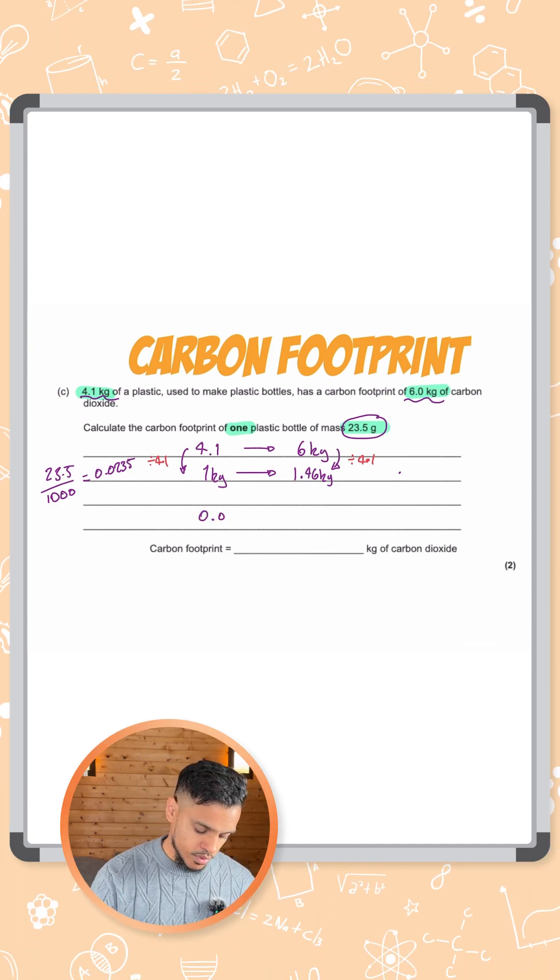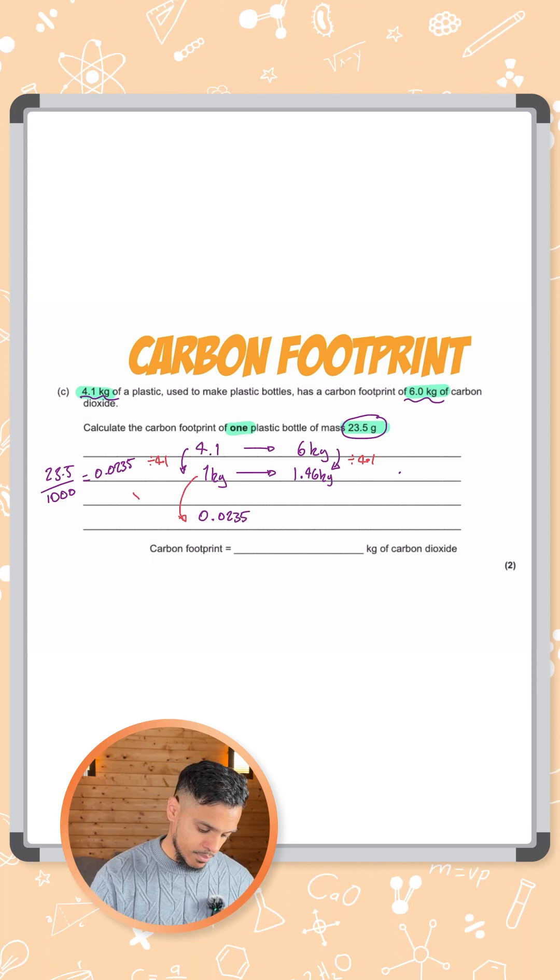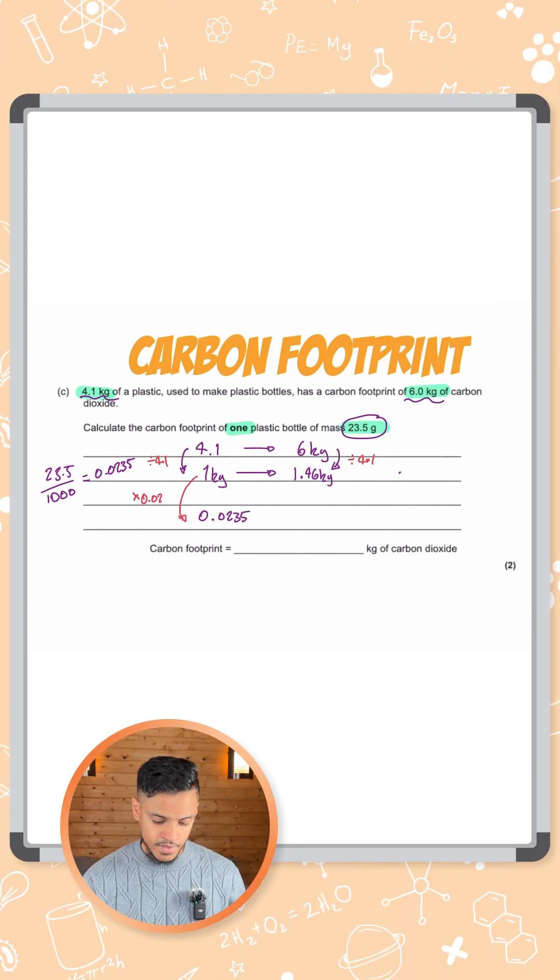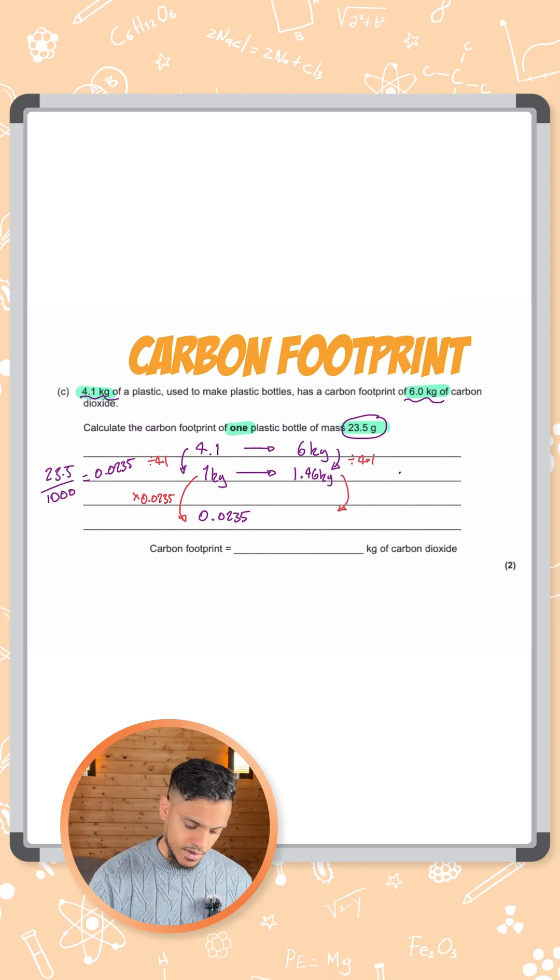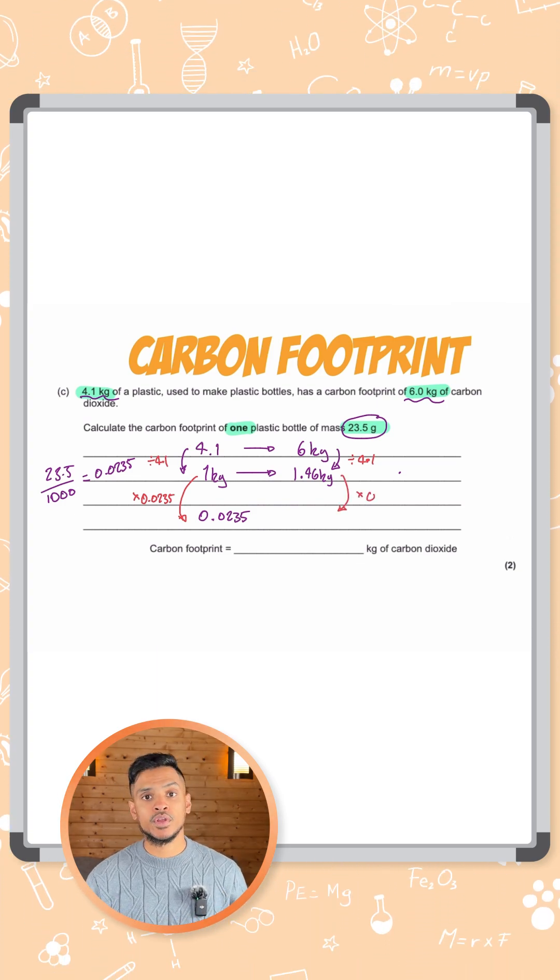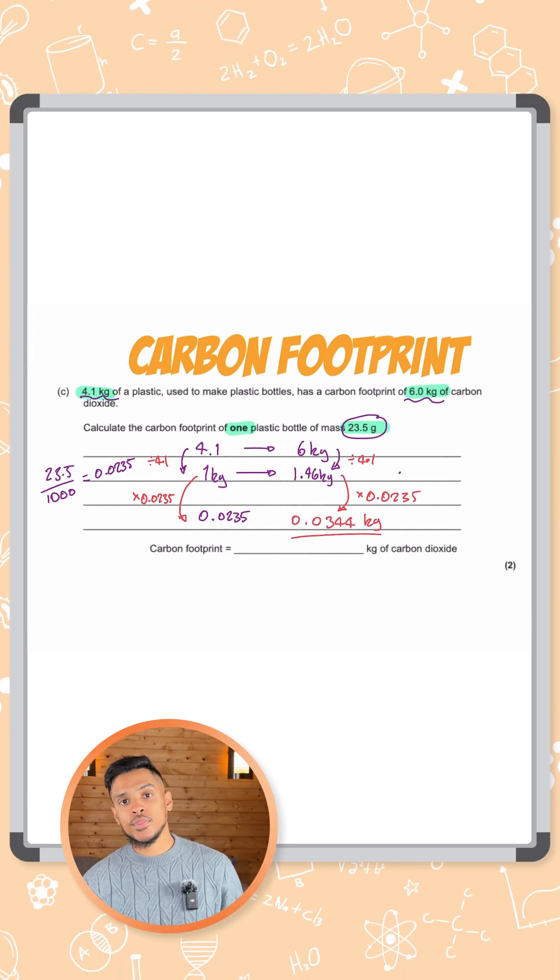To get to 0.0235 from 1 kilogram, we multiply by 0.0235. Let's do the same on the other side. We multiply 1.46 kilograms by 0.0235, and that gives us a final answer of 0.0344 kilograms.